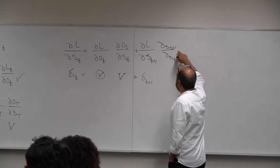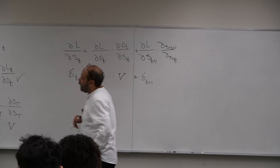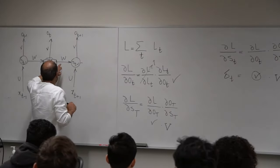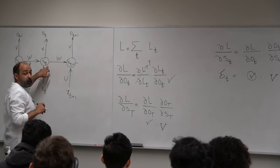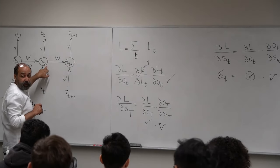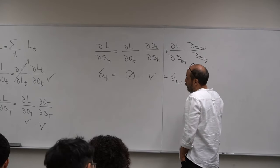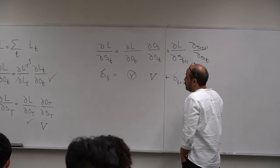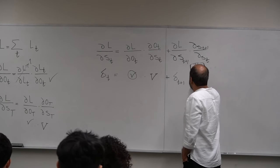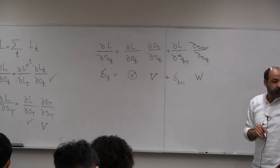Now I have to compute the derivative of S_{t+1} with respect to S_t. Since S_{t+1} = W * S_t (plus other terms), the derivative of S_{t+1} with respect to S_t is W.